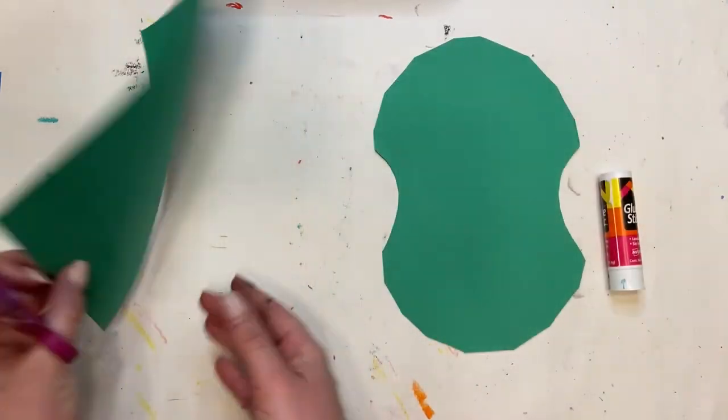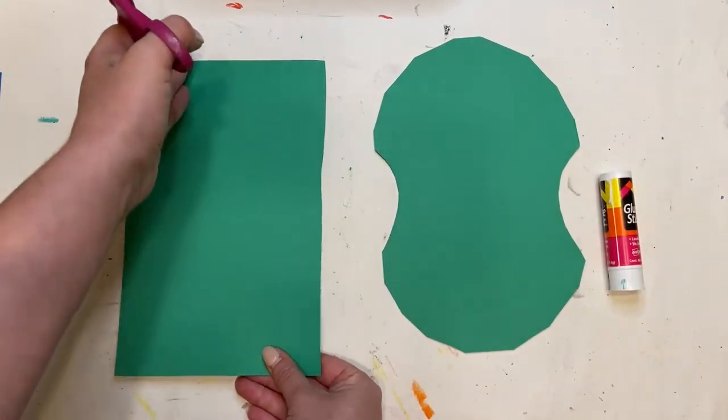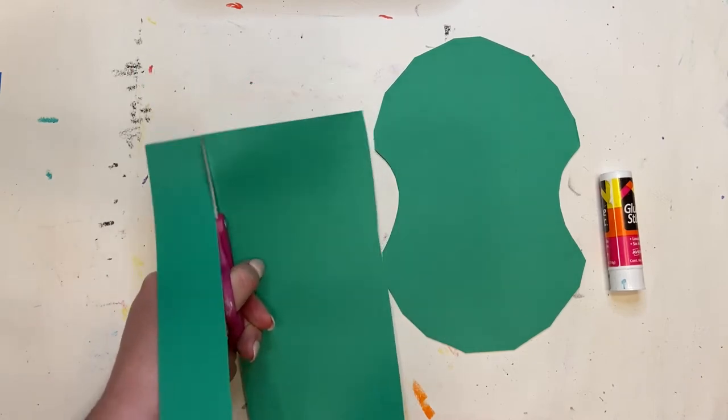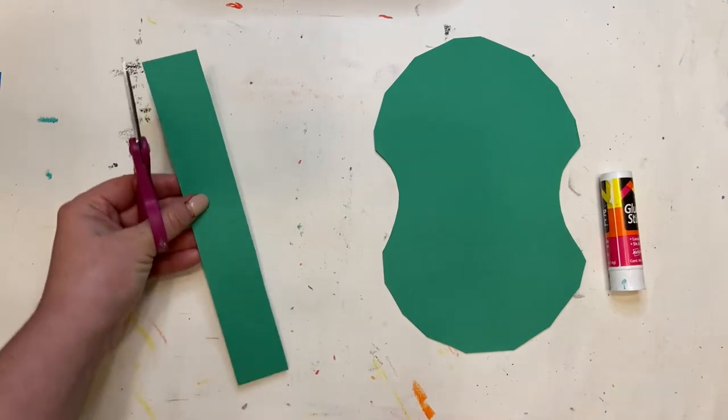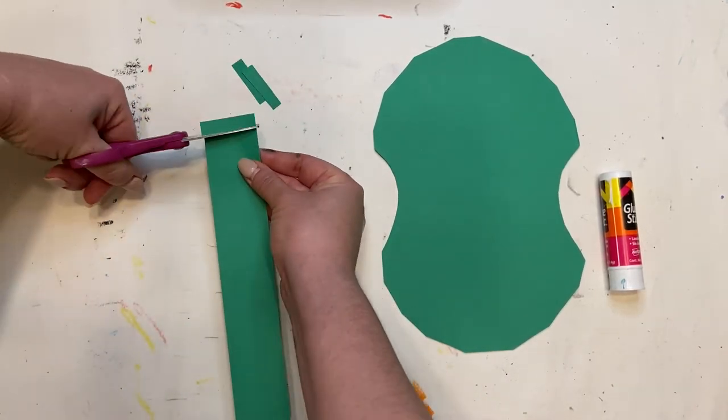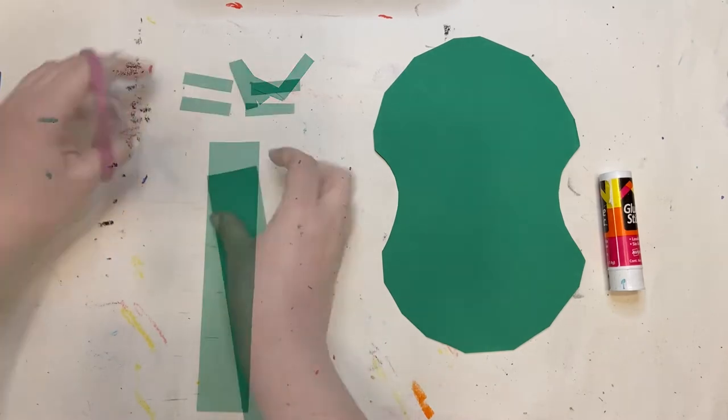All right, the last thing is we're gonna take that extra half of our paper and we're gonna cut a big strip to use as the neck of the guitar. I'm gonna cut four smaller pieces off the top. Those will be for the tuners.